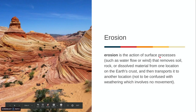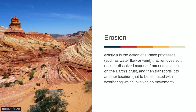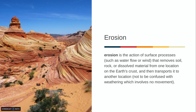Erosion. Erosion is the action of surface processes such as water flow or wind that remove soil, rock, or dissolved material from one location on the earth's crust and then transports it to another location — not to be confused with weathering, which involves no movement. So this is a clear site of erosion, where soil and dissolved material has been removed and brought to another location.